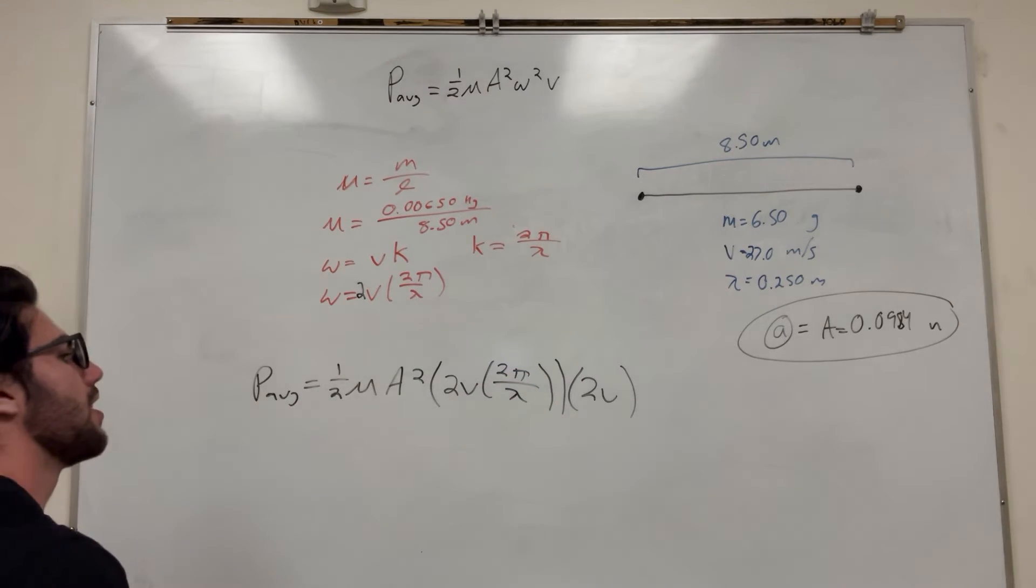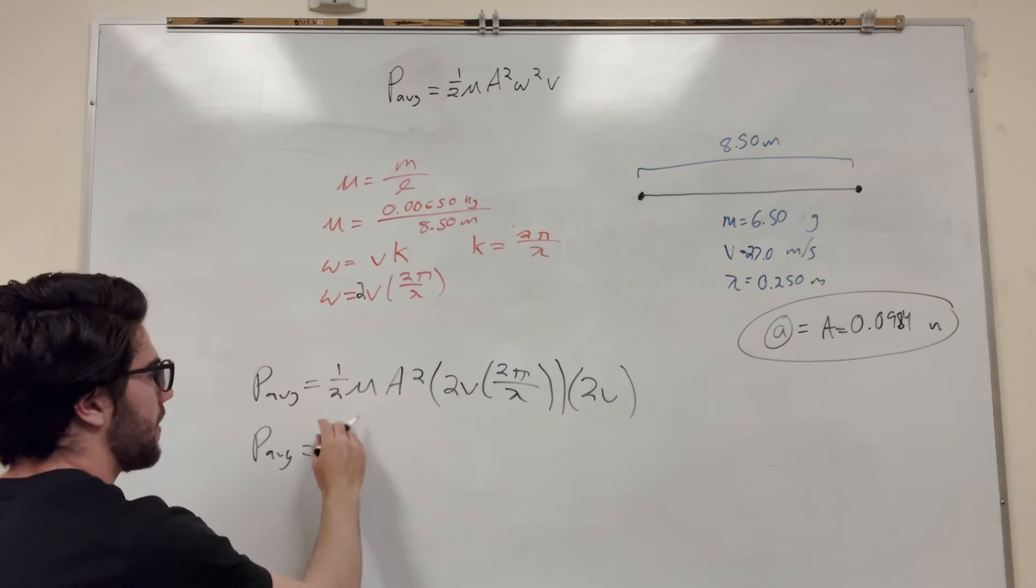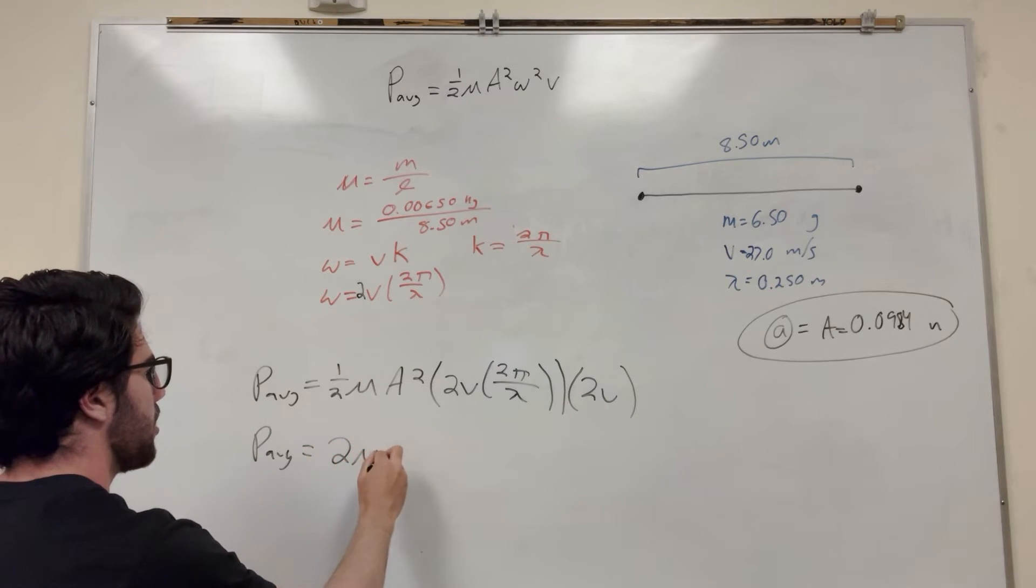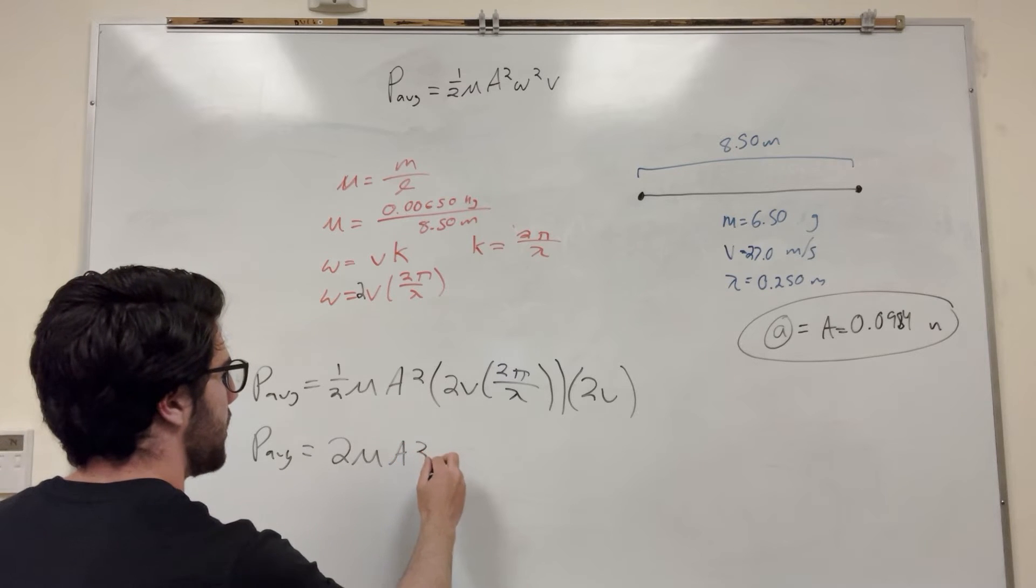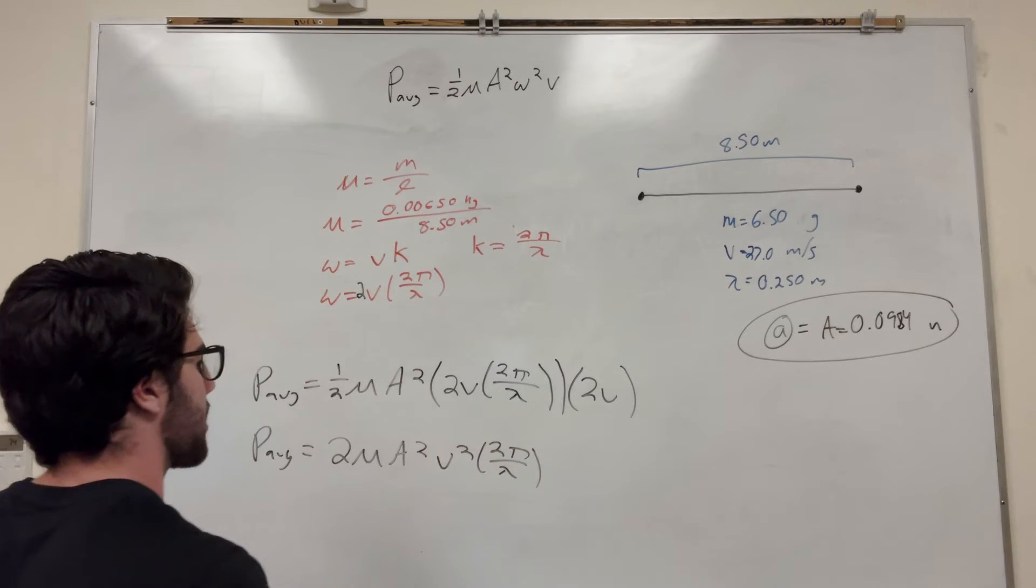I guess the V's would multiply together and you could end up simplifying this. So this is going to be 4, and then with the 1 half it's going to become 2. So 2 mu A squared V squared times 2 pi over lambda squared. So this is what this equation comes down to.